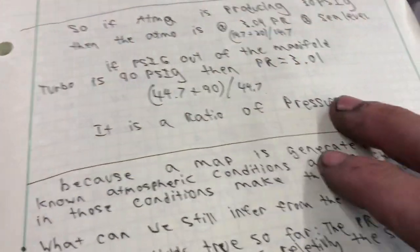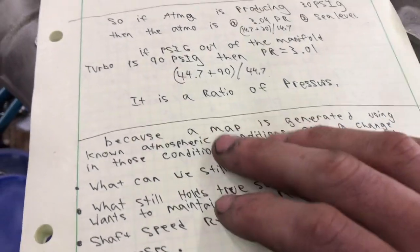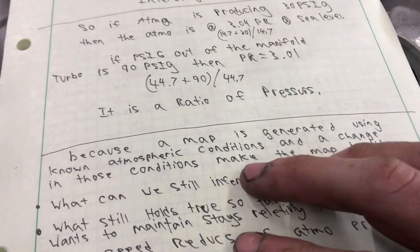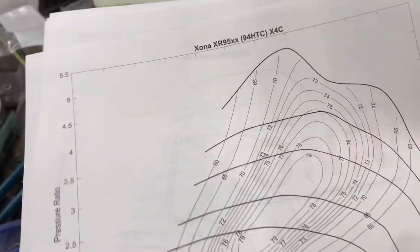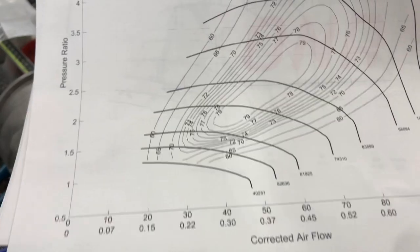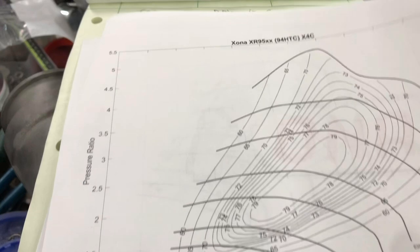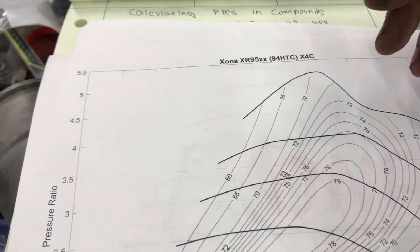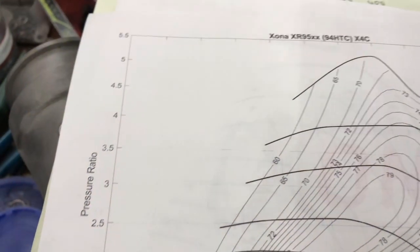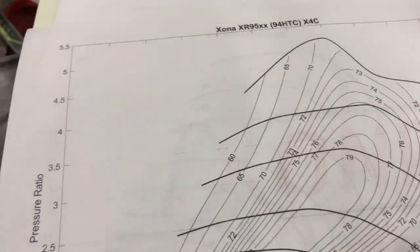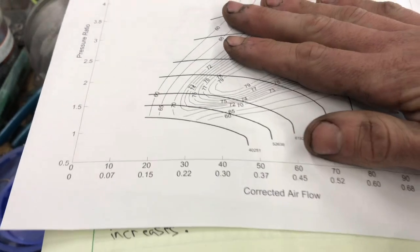It is just the ratio of the pressures. Because a map is generated using known atmospheric conditions, so pressure and temperature, so like these maps don't have it on there. But a lot of your factory Holset maps and a lot of the Garrett maps will say at pressure 14 PSIA and at Rankine, however you guys want to pronounce it, or Kelvin number, sometimes Fahrenheit, sometimes Celsius number. Those conditions create this map.